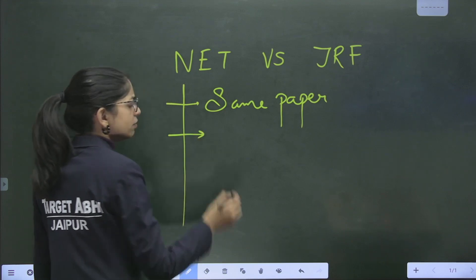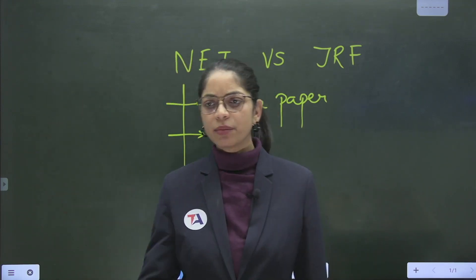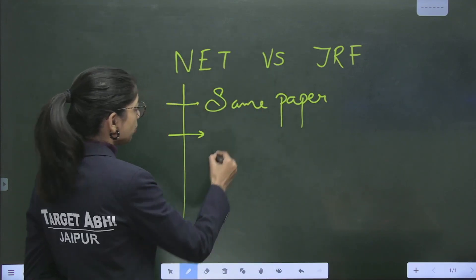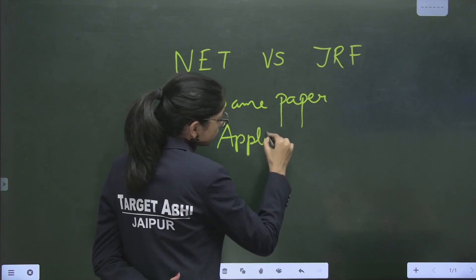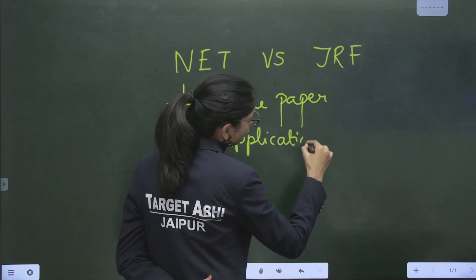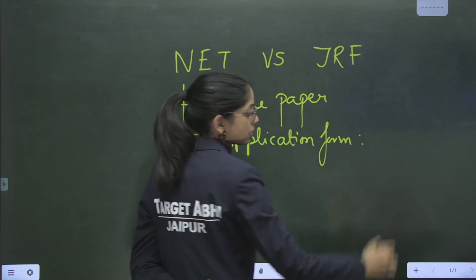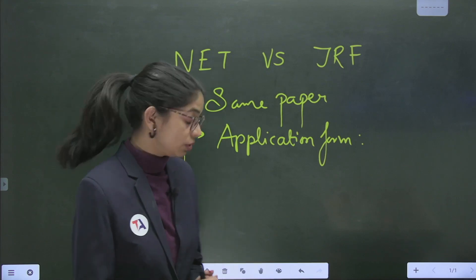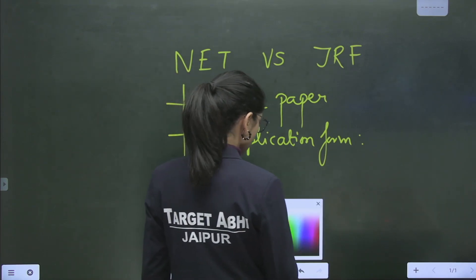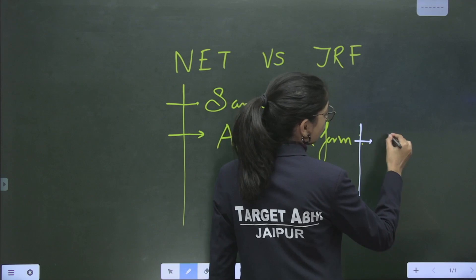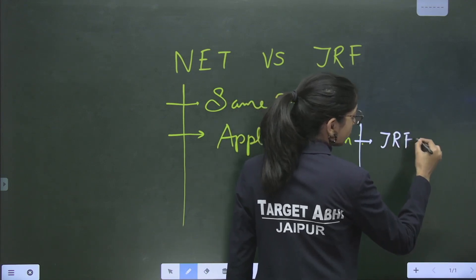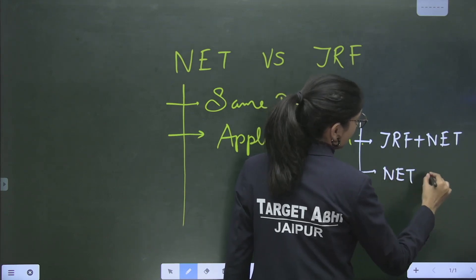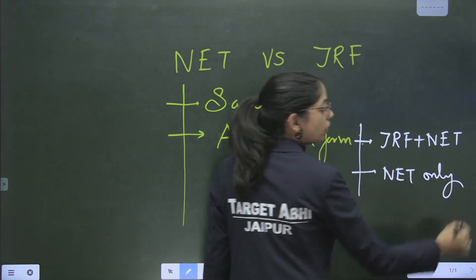Then, how do people say that we are JRF and we are just NET? Because at the time of filling the application form, when people fill the application form, they are given two choices. One choice is JRF plus NET, or just give this examination for NET only.